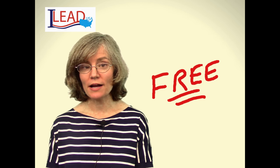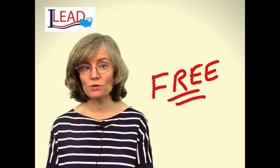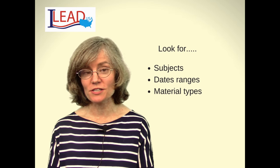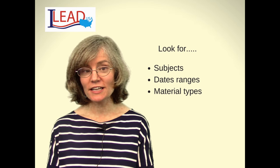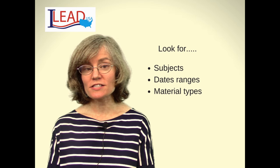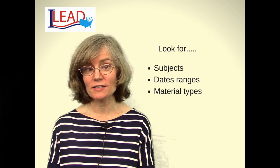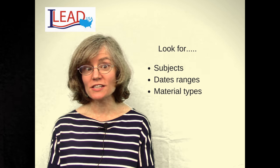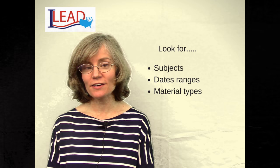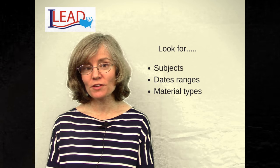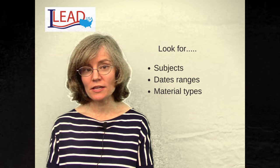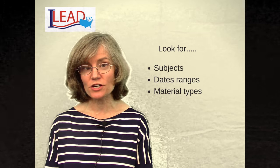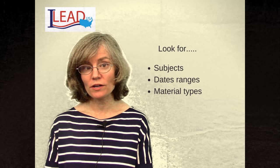Before we head over to Power Library, let me share with you three things to look for when choosing a database. Firstly, look at the subjects included in that database. Second, look for the dates included. And third, look for the material type. That would be things like trade magazines, books, scholarly journals, or images.